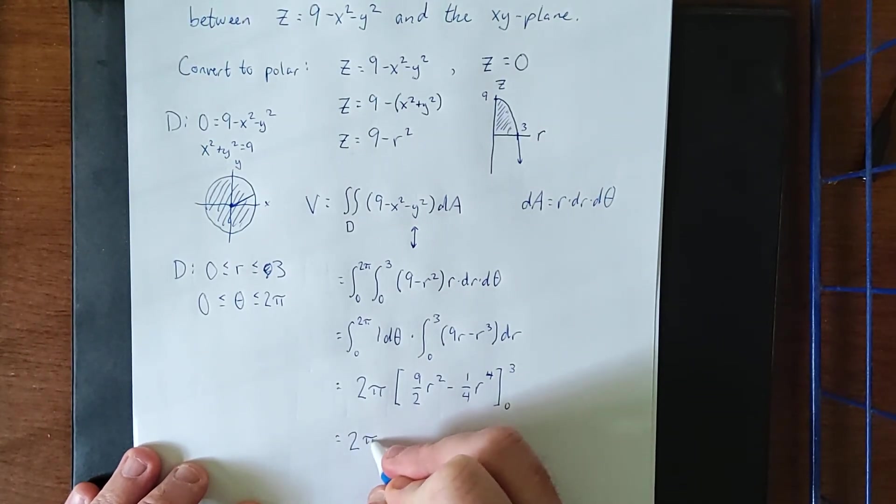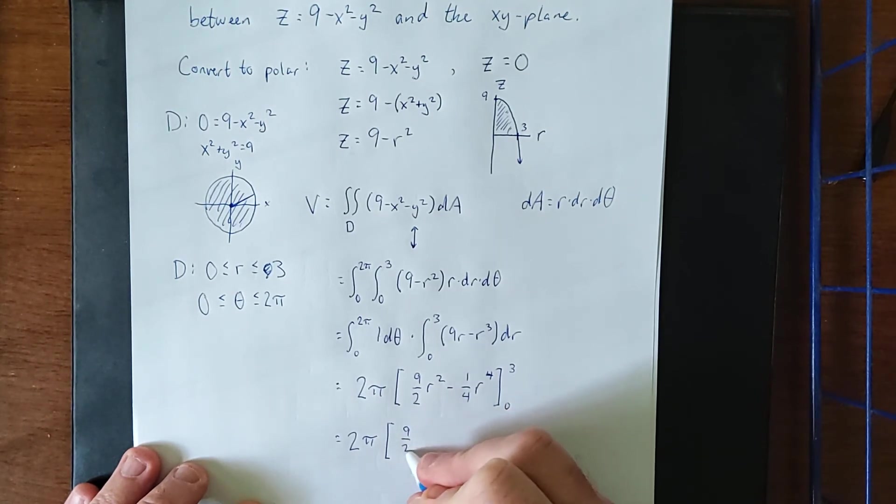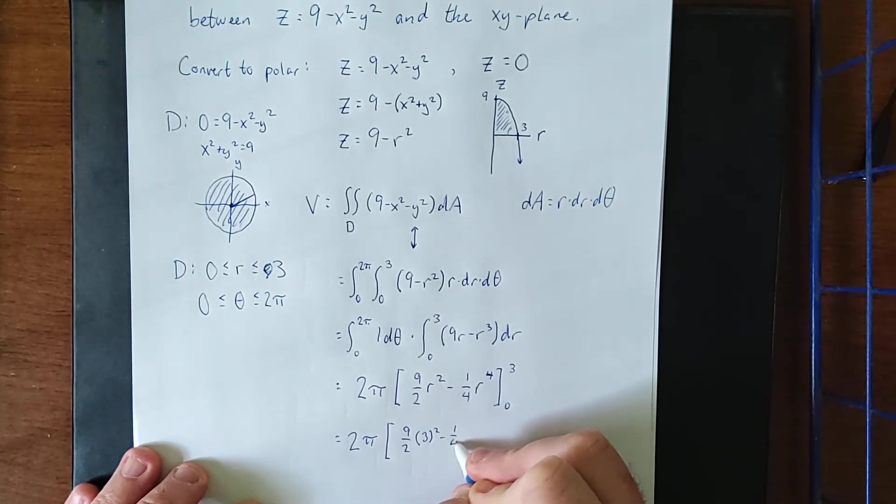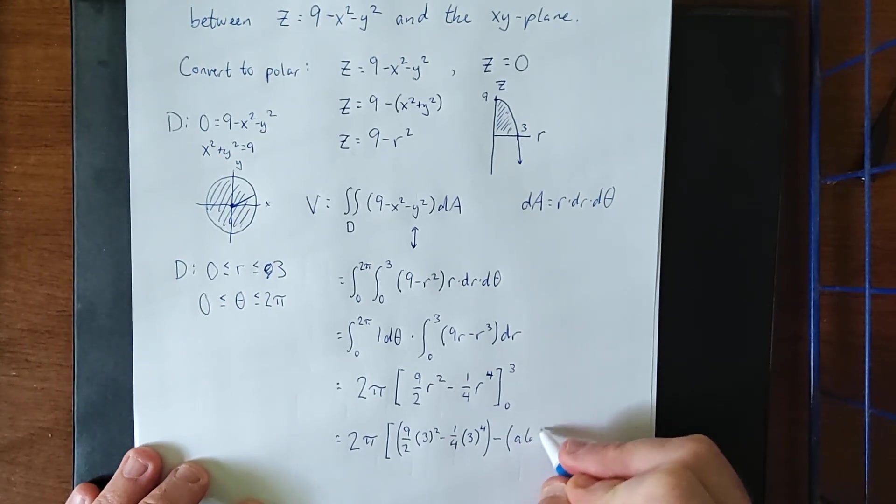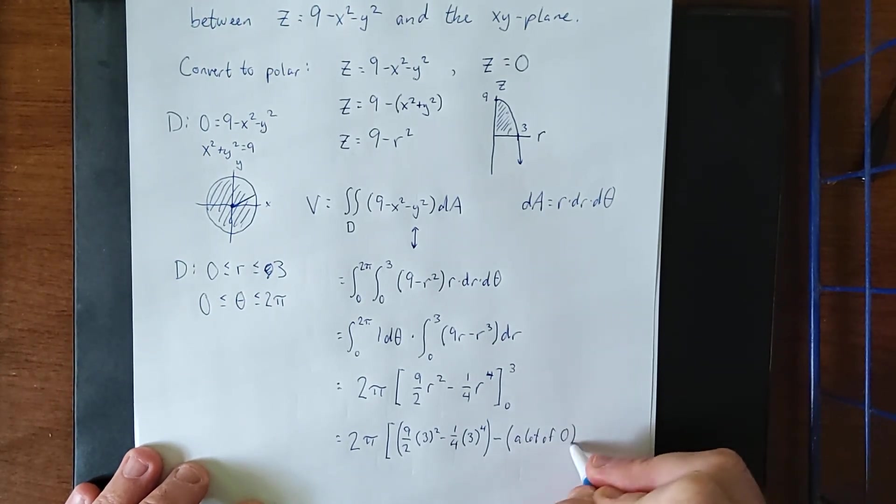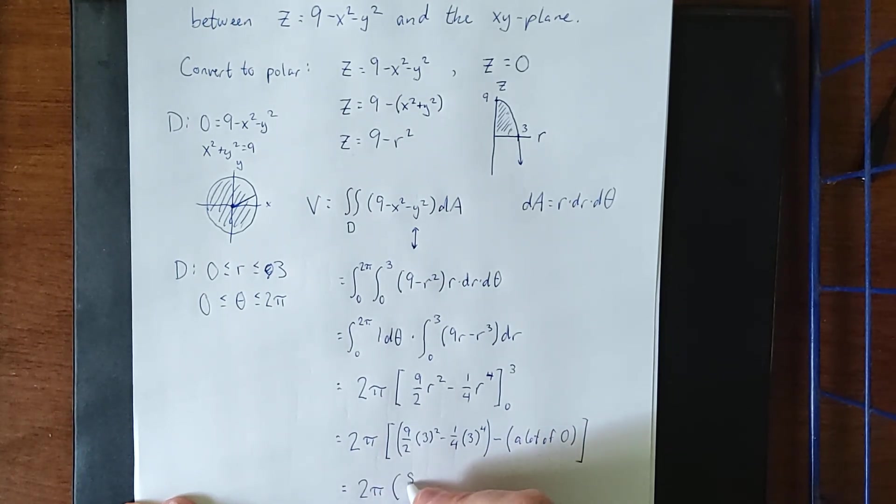Continuing to simplify, we'll keep the 2 pi out front. This will be 9 halves times 3 squared minus 1 quarter times 3 to the 4th minus a lot of zero when we plug in that lower bound. So I'm seeing 81 halves minus 81 fourths. That's going to be 81 fourths. 2 pi times 81 fourths will give us 81 halves.